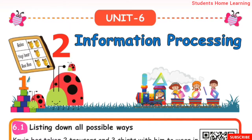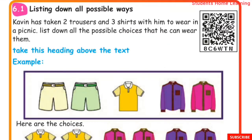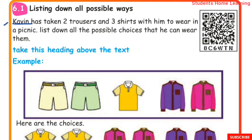Unit 6: Information Processing. List down all possible ways. Kavin has taken 2 trousers and 3 shirts with him to wear on a picnic. We need to find in how many ways he can wear the 2 trousers and 3 shirts.